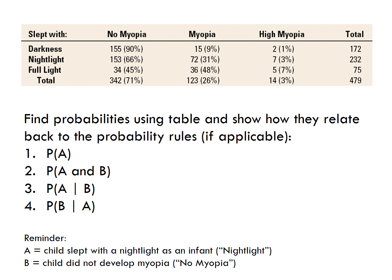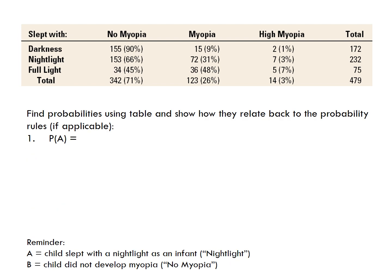Take a minute and answer these four questions. A represents the child sleeping with a nightlight and B represents the child not developing myopia. The probability of A is an unconditional probability, so our total is out of the 479 children. Since 232 children slept with a nightlight, P(A) = 232/479. For the probability of A and B, still unconditional, our total is again 479. There were 153 children who slept with a nightlight and did not develop myopia, so P(A and B) = 153/479.